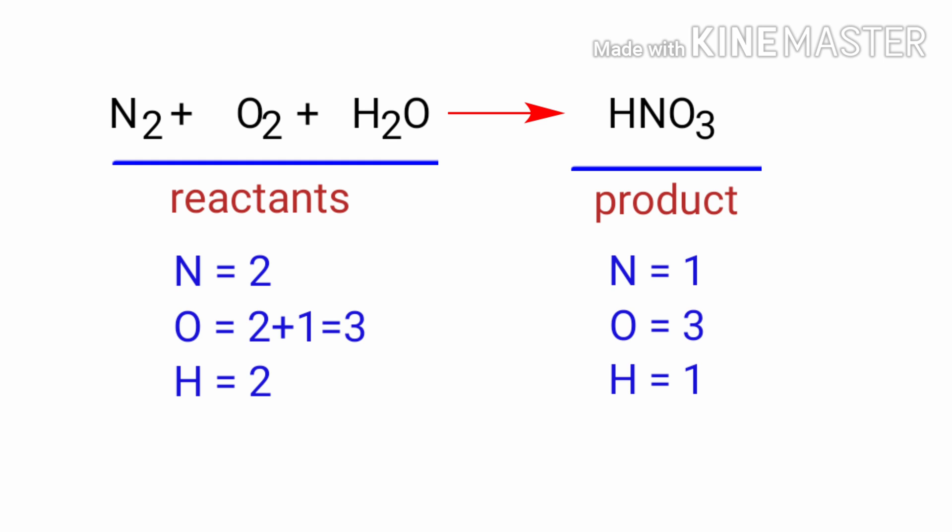The number of atoms are not balanced on both sides. To balance the chemical equation, we need to make use of coefficients. A coefficient is a number that we place in front of a chemical formula.